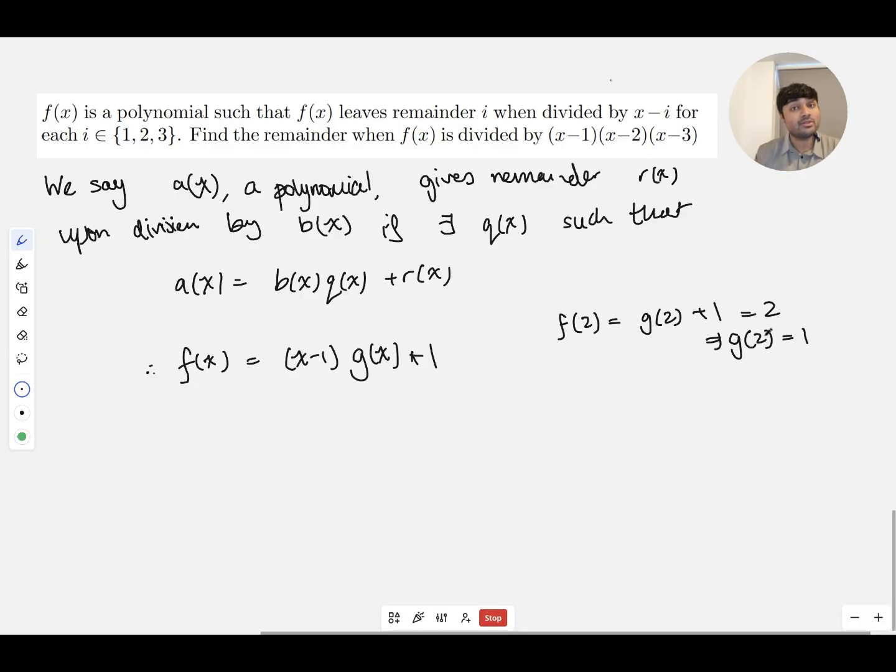Or we can just leave g of 2 as 1 and use the remainder theorem on this. And so that tells us that g of x is going to be (x minus 2) times some other polynomial h of x, plus 1.